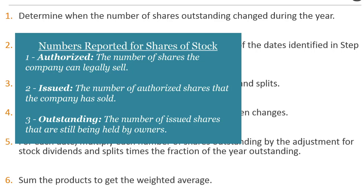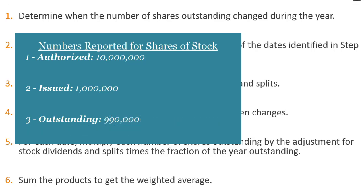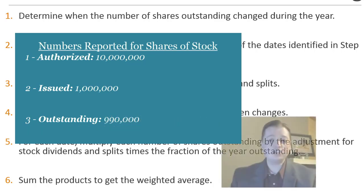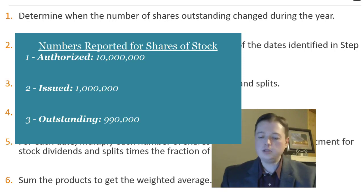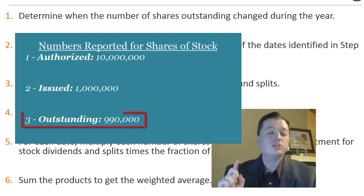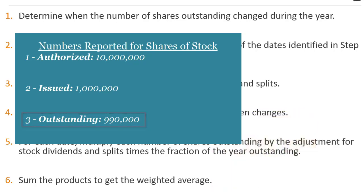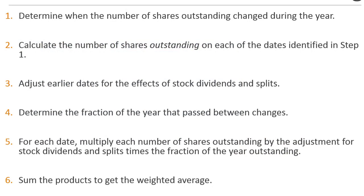Because of that, most companies hold repurchased shares as treasury stock. On the balance sheet you'll often see all three numbers: for example, 10 million authorized, 1 million issued, 990,000 outstanding — meaning 10,000 are held as treasury stock. For earnings per share calculations, we only care about shares outstanding, since those are the ones actually held by owners.